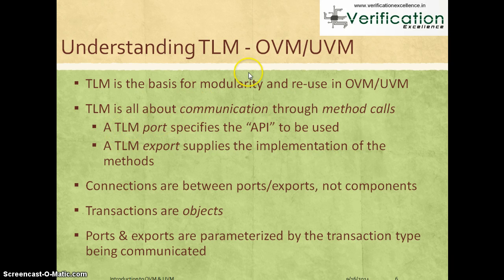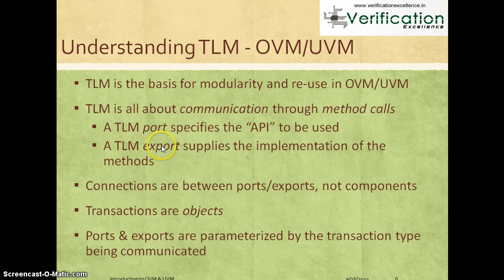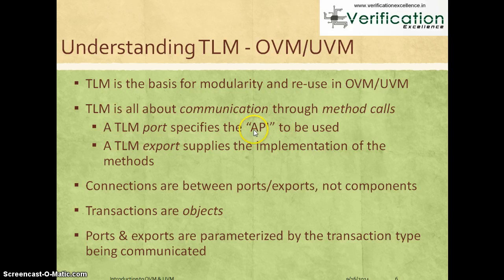With respect to OVM and UVM, TLM defines a port and an export. A TLM port specifies the API or function call that needs to be used when one component needs to send a transaction across a TLM channel. A TLM export supplies the actual implementation of that method when the port is called. So the TLM port is the function name called when a component communicates a transaction over a channel, and the TLM export is the implementation of that function by which the communication happens.